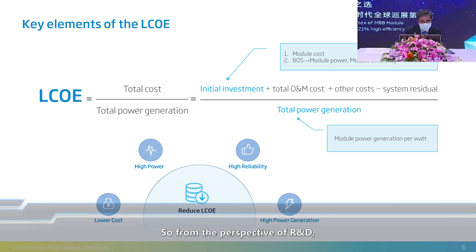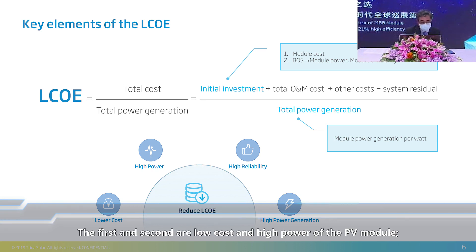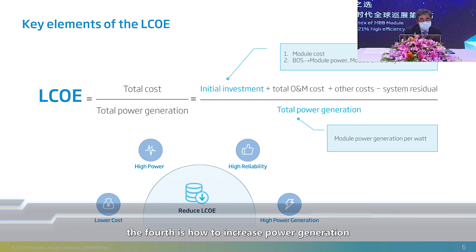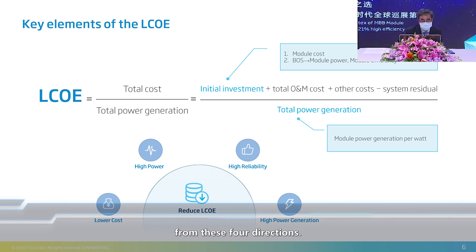From the perspective of R&D, the reduction of LCOE of PV power generation comes from four directions. The first and second are low cost and high power of the PV module. The third is high reliability, related to the life cycle of the module, which has been extended from 25 to 30 years. The fourth is how to increase power generation under various environmental, climate, and light conditions. We can reduce LCOE of PV systems from these four directions.